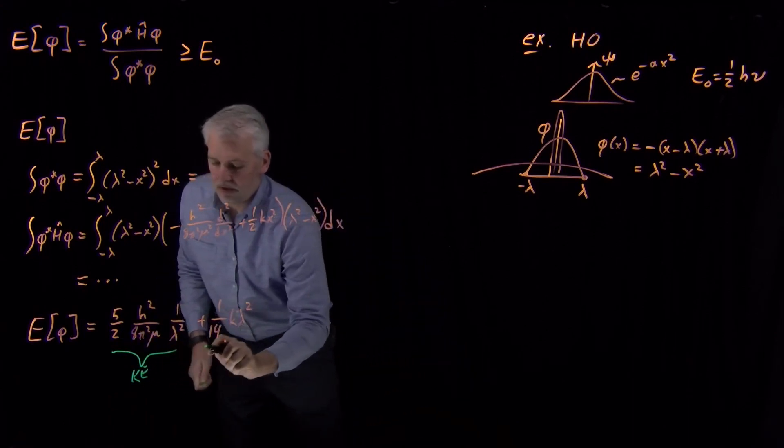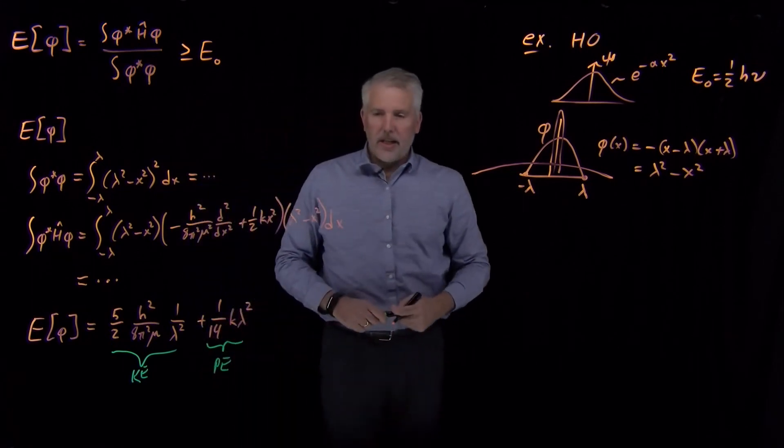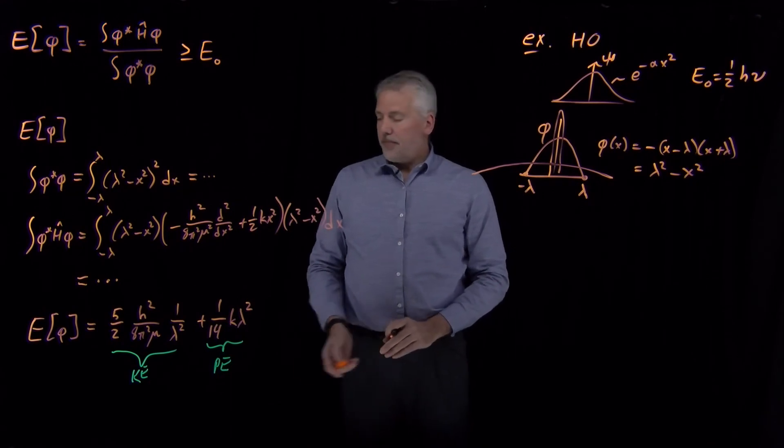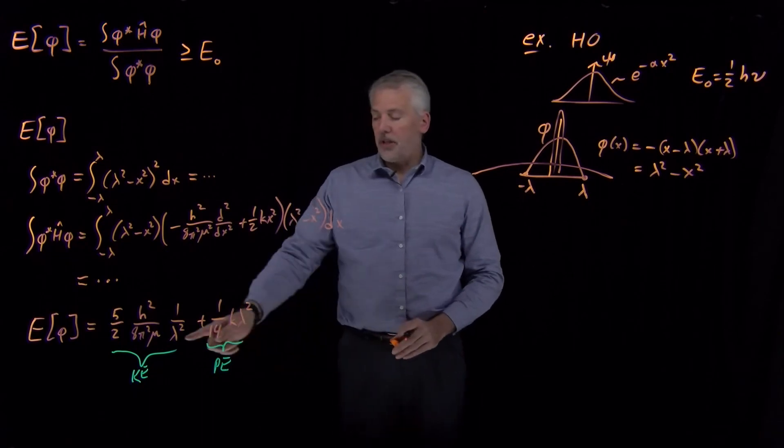Which, again, I can break down into one piece that comes from the kinetic energy and one piece that comes from the potential energy. So what we see is that the total energy of this trial function depends on the value of lambda.